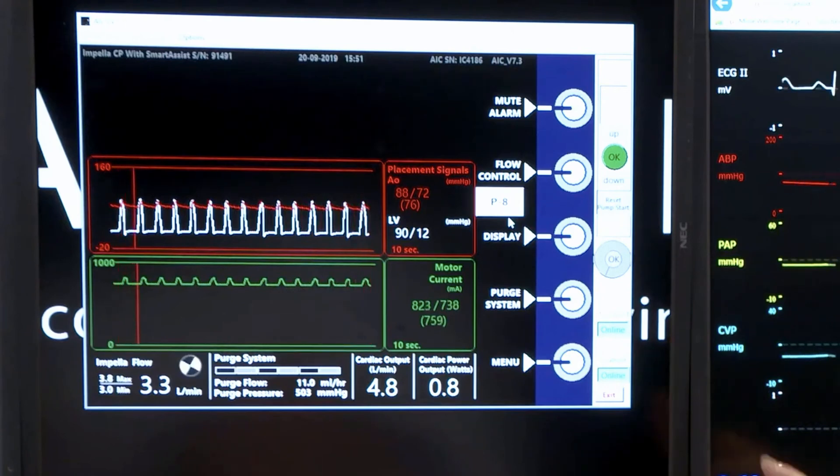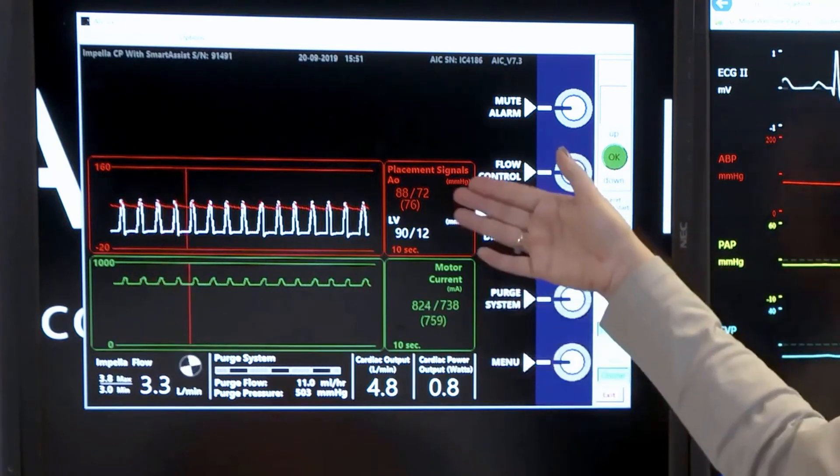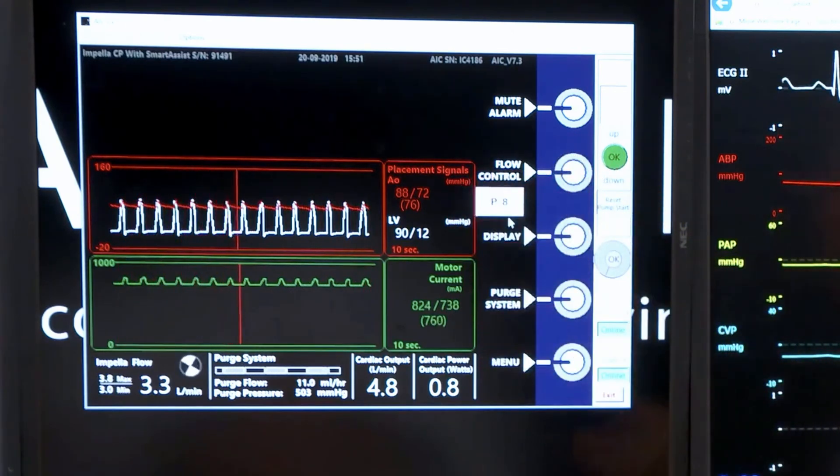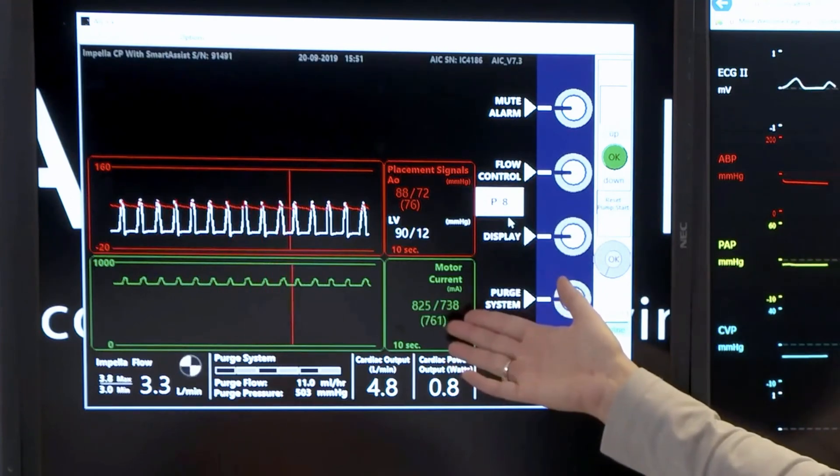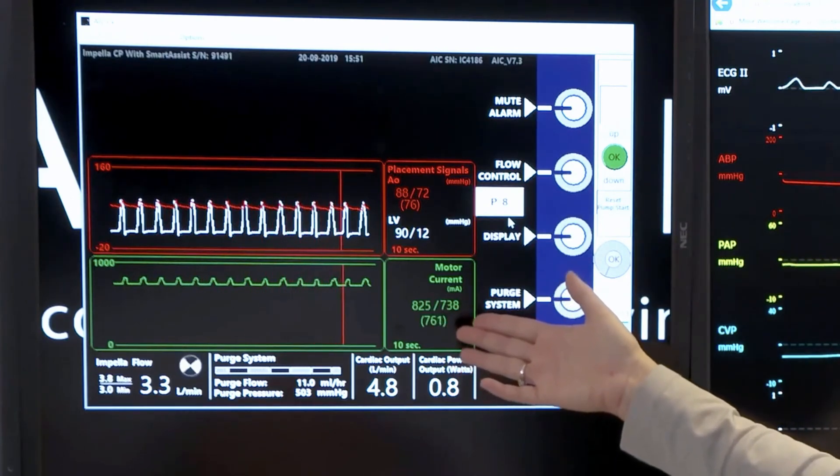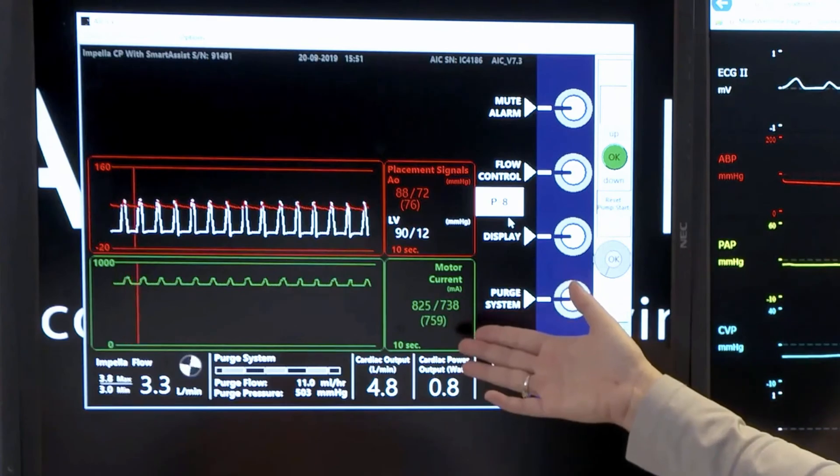As we look at the waveforms that we see on the placement screen, you'll notice that we have a green waveform, which is our motor current. The motor current is going to help with identifying positioning of our device.